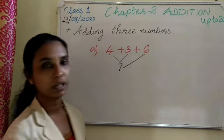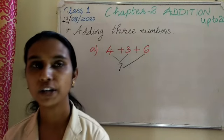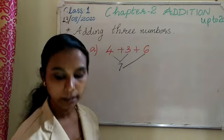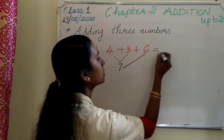Then we add this third number. 7 in your mind, 6 on your finger. After 7, 8, 9, 10, 11, 12, 13. So the sum is 13.